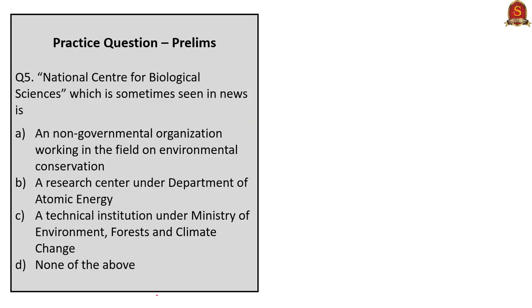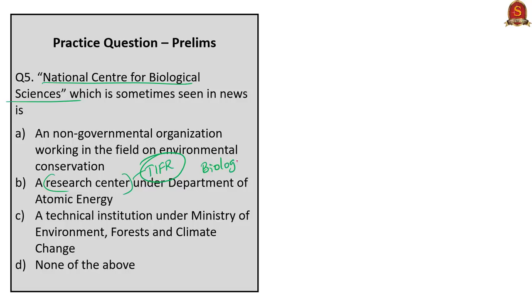Question 5 asks about the National Centre for Biological Sciences, which is sometimes seen in the news, with four options: A, a non-governmental organization working in environmental conservation; B, a research center under Department of Atomic Energy; C, a technical institution under Ministry of Environment, Forests and Climate Change; D, none of the above. The National Centre for Biological Sciences (NCBS) is a research center under the Tata Institute of Fundamental Research, specialized in biological research. As the Tata Institute of Fundamental Research falls under the Department of Atomic Energy, NCBS also falls under it. The correct answer is B: 2 only—National Centre for Biological Sciences is a research center under the Department of Atomic Energy.